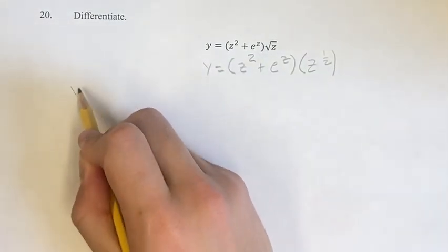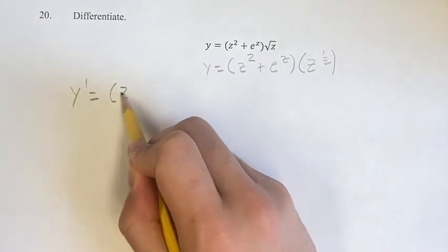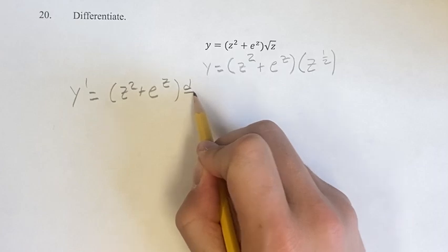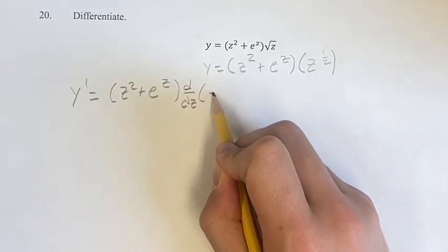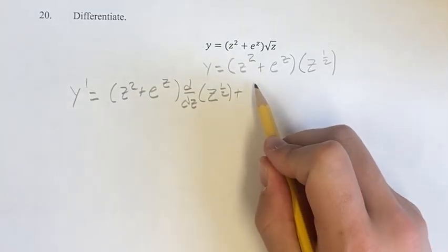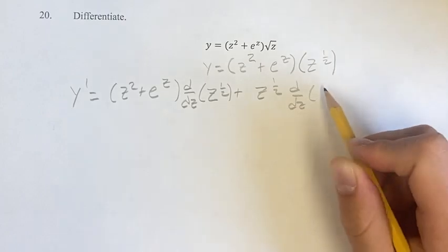When we actually want to find the derivative, we can use the product rule. Since we have this times this, the derivative is going to be the first term, z squared plus e to the z, times the derivative of the second term plus the second term times the derivative of the first term.